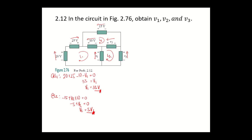At loop 3, you have the voltages of V2, V3, and V1. Your V1 is positive because it is in the same direction as your loop. Your V2 opposes the direction of your loop, so you have negative V2. Your V3 also opposes the direction of your loop, so that would be negative V3, equal to 0.